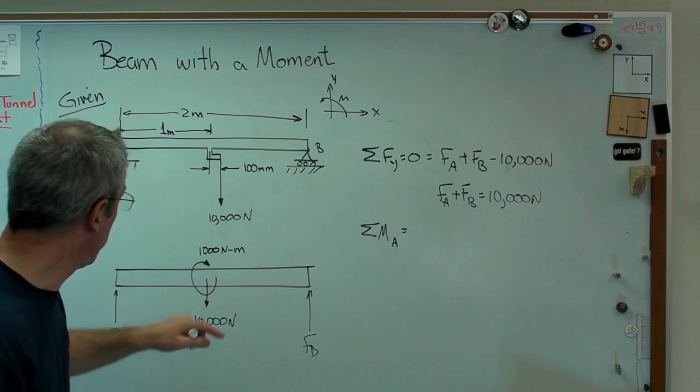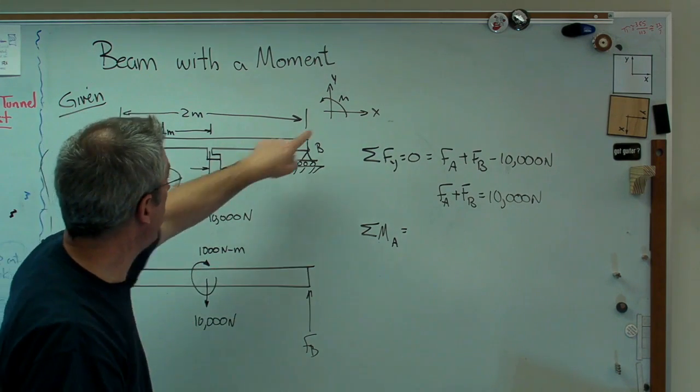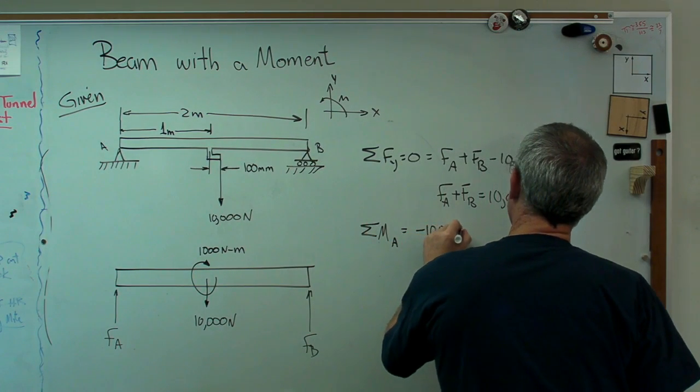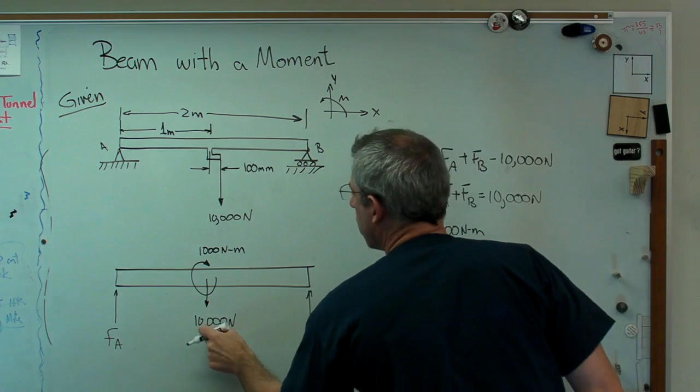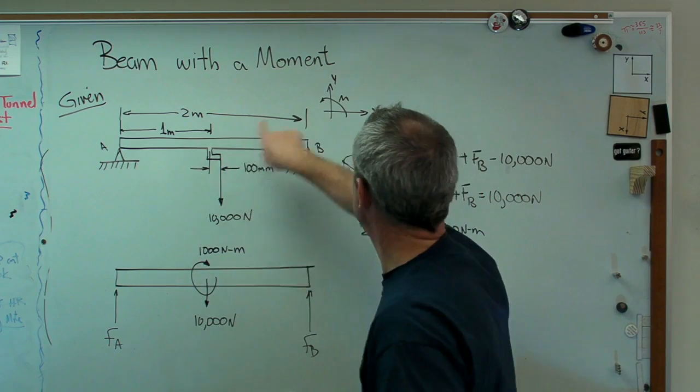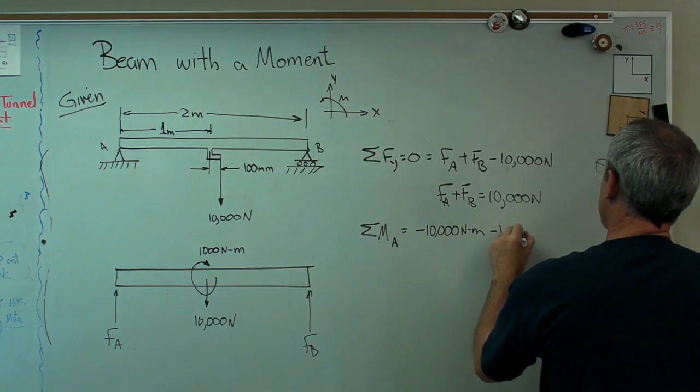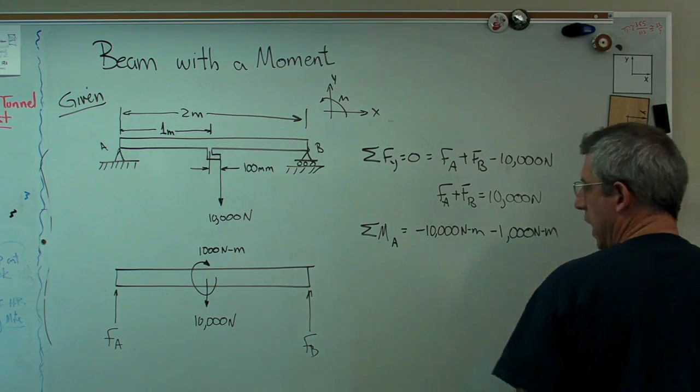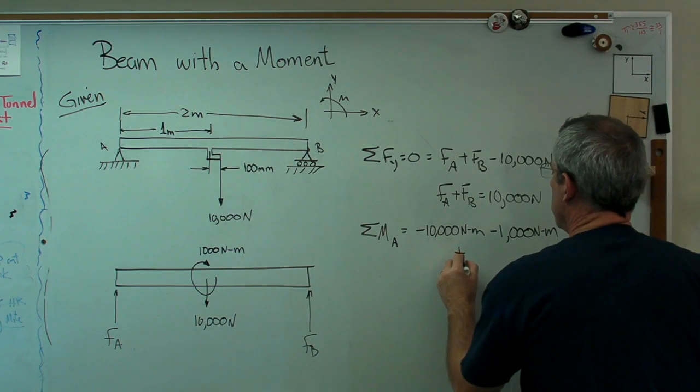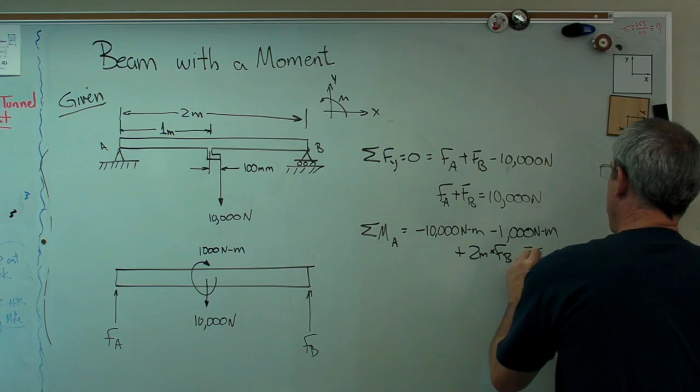So right there, it's going to make a moment clockwise. So that's against my sign convention. So minus 10,000 newton meters. That takes care of that. That's a clockwise point moment, which also goes against that. So it's going to be another minus 1,000 newton meters. And finally, I have F_B acting 2 meters from the end. Plus 2 meters times F_B. And that stuff all equals 0.